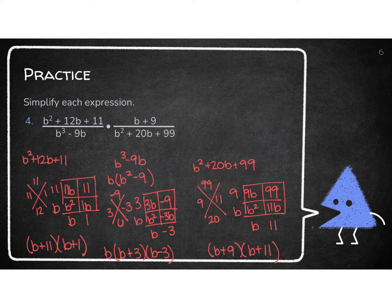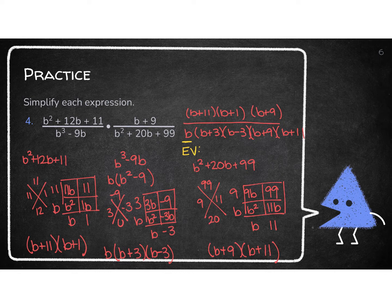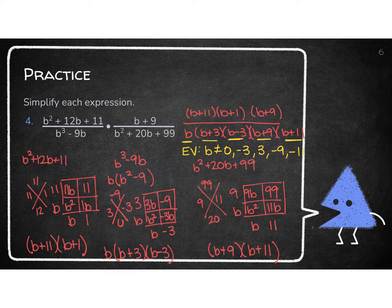Now I write it all together — top on top, bottom on bottom. Top: (B plus 11)(B plus 1) from the first fraction, times (B plus 9) from the second. Bottom: B(B plus 3)(B minus 3) from the first fraction, times (B plus 9)(B plus 11) from the second. Moving straight into EVs: B cannot equal 0, B cannot equal negative 3, B cannot equal positive 3, B cannot equal negative 9, and B cannot equal negative 11.